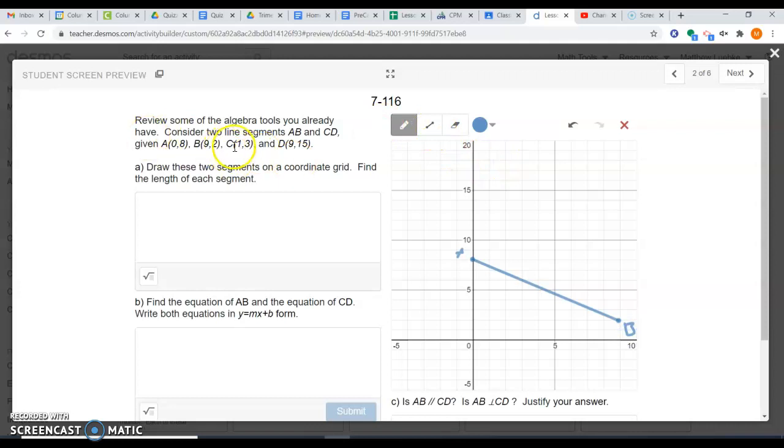The next one, you have 1 comma 3 and 9 comma 15. So you go over 1 up 3 for C, you go over 9 up 15 for D. And you have your two lines that you want to figure out.